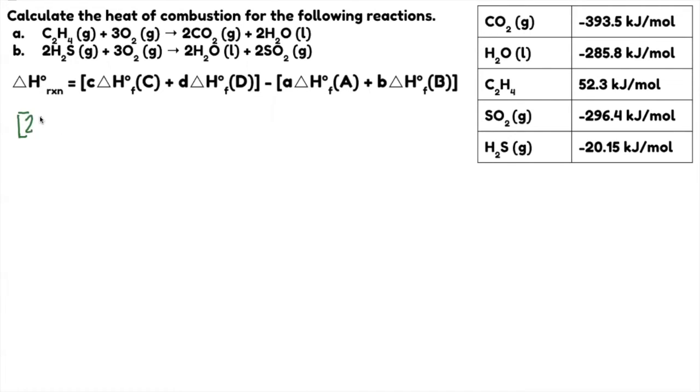Product first. So 2 times CO2 is 393.5 plus 2H2O. So coefficient copy this one. H2O is 285.8 kilojoules minus reactants. This is one. So just copy one. Again, you may opt not to write this. C2H4 is 52.3 plus B. This is 3O2. What is the enthalpy of O2? Zero. Again, it is the most stable form. So it's always zero. Doing the math, this will give you negative 1,411 kilojoules per mole.